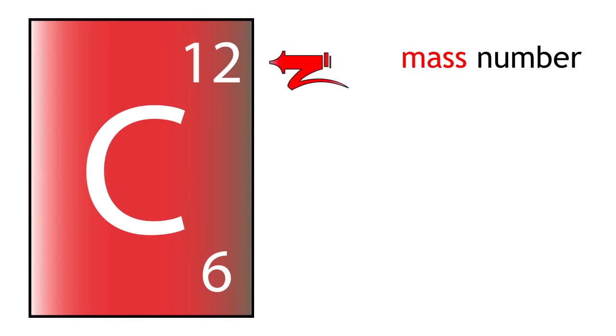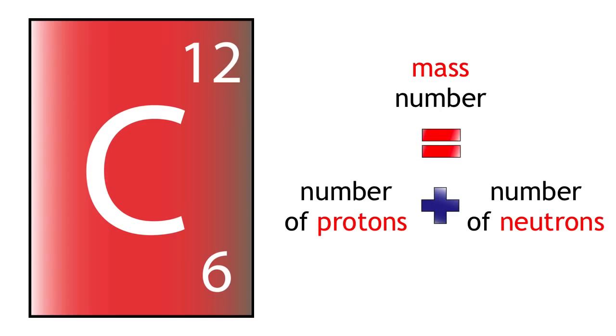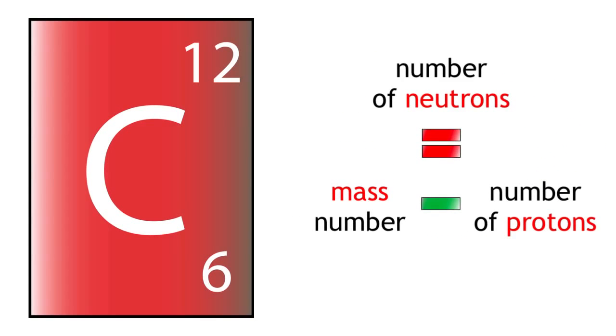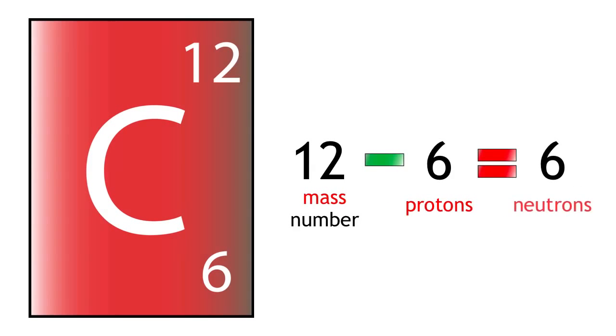Carbon-12 has a mass of 12 and 6 protons. Remember, mass number equals protons plus neutrons. So we can rearrange this formula to give us neutrons equals mass number minus protons. 12 minus 6 equals 6. Therefore, it has 6 neutrons.